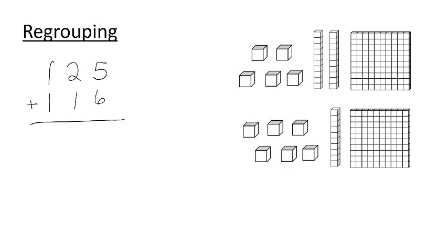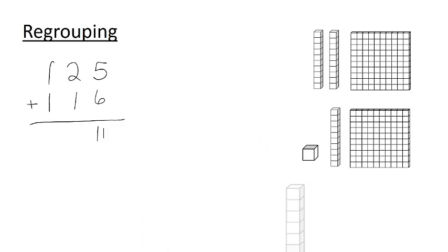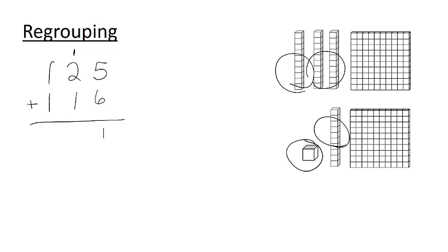However, if we begin at the units, and we notice that we have 11 of them, we can exchange 10 units for a tens block. And we carry this new block over to the tens column like this. Okay, so we have one new 10, and this leaves one unit as our remainder. And then the rest of the steps in this particular algorithm follow accordingly.